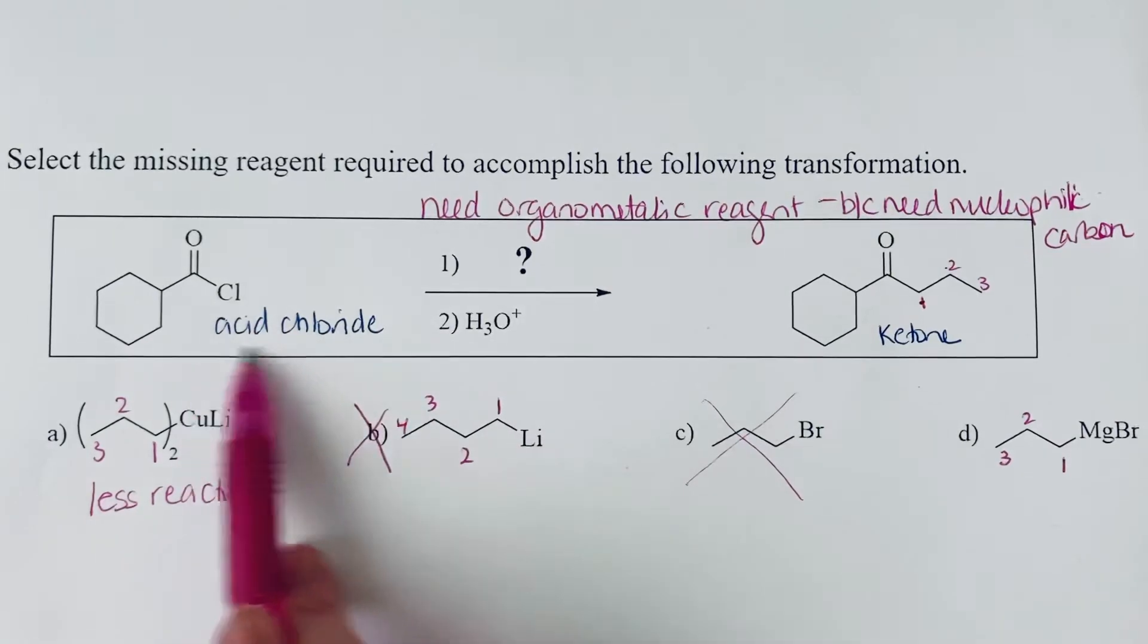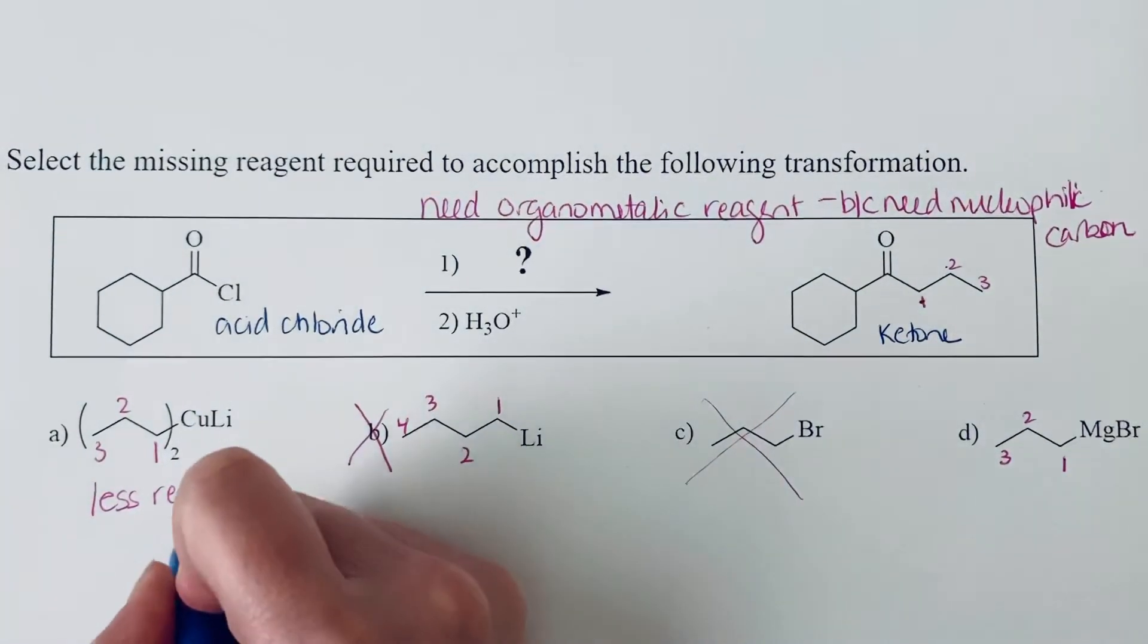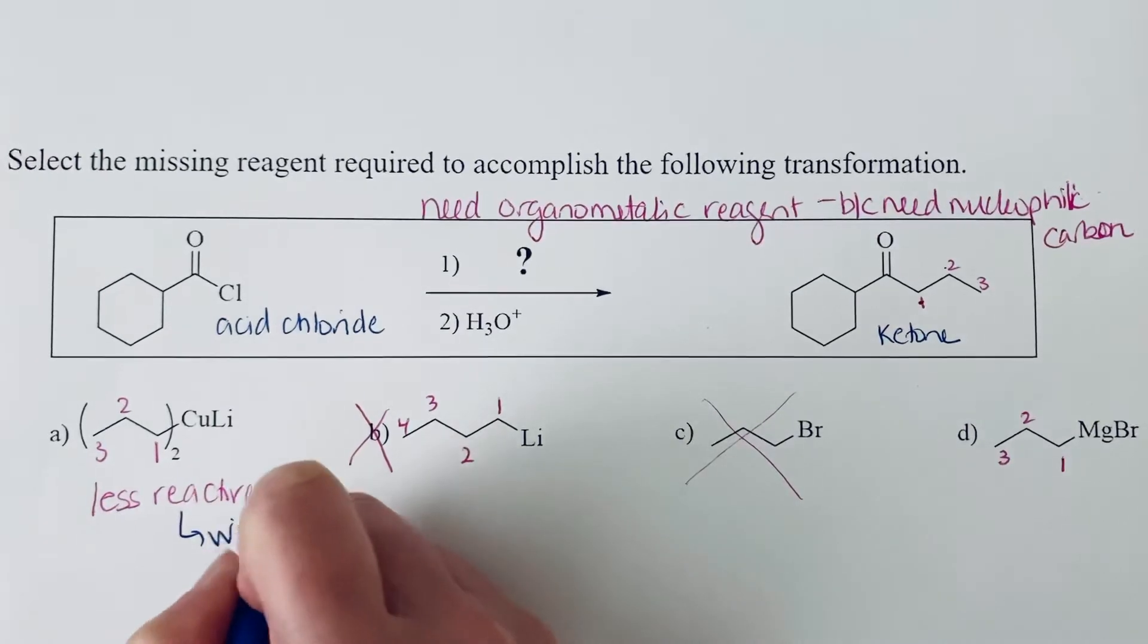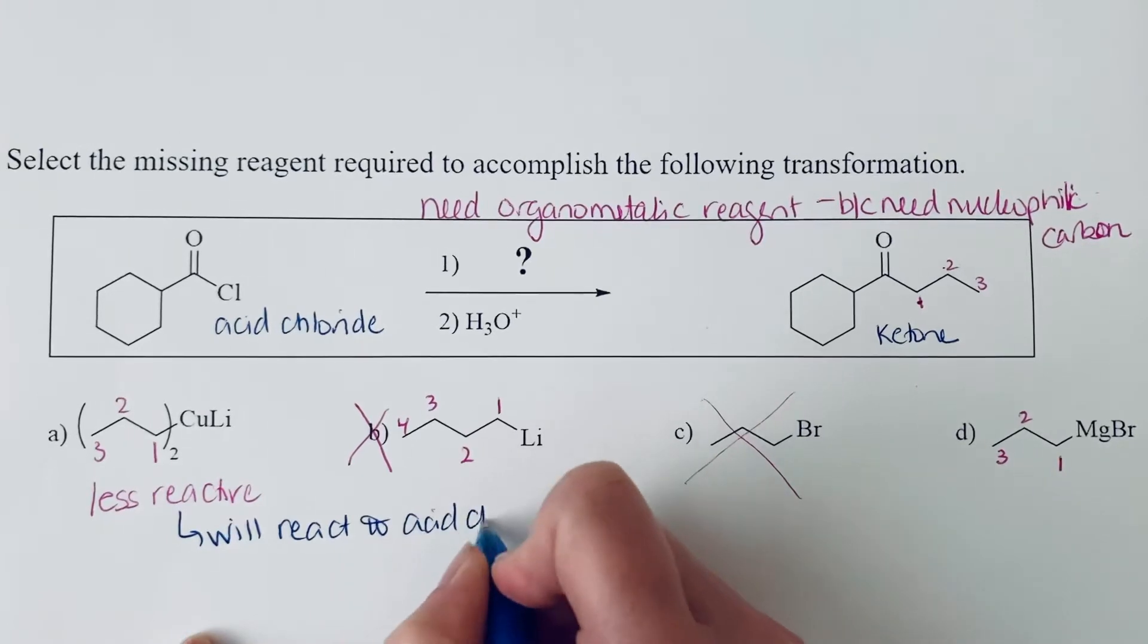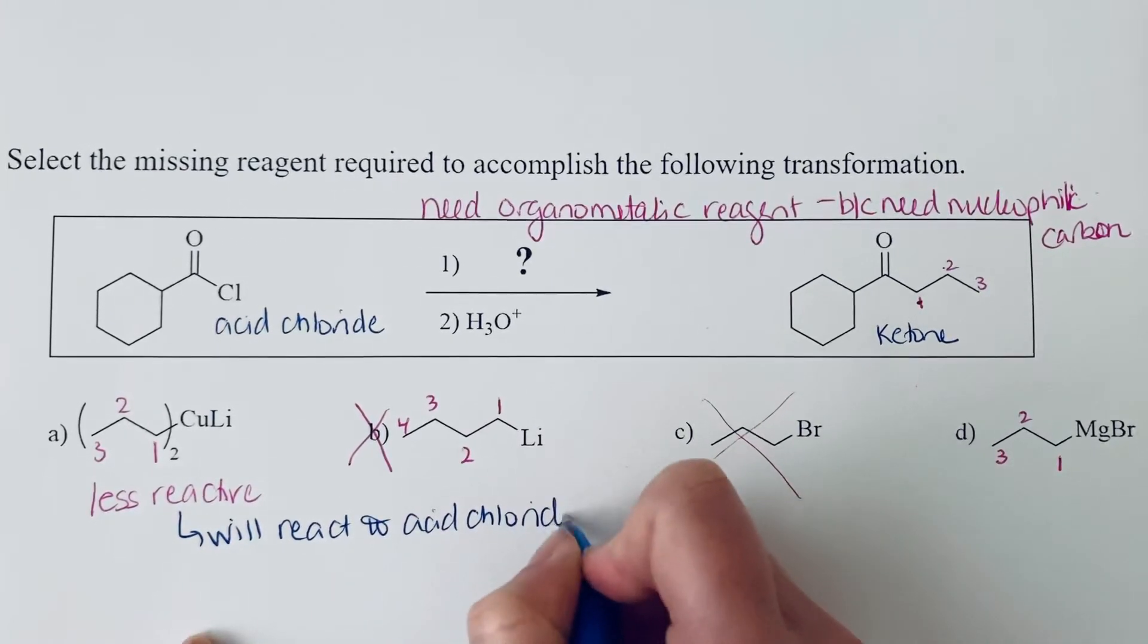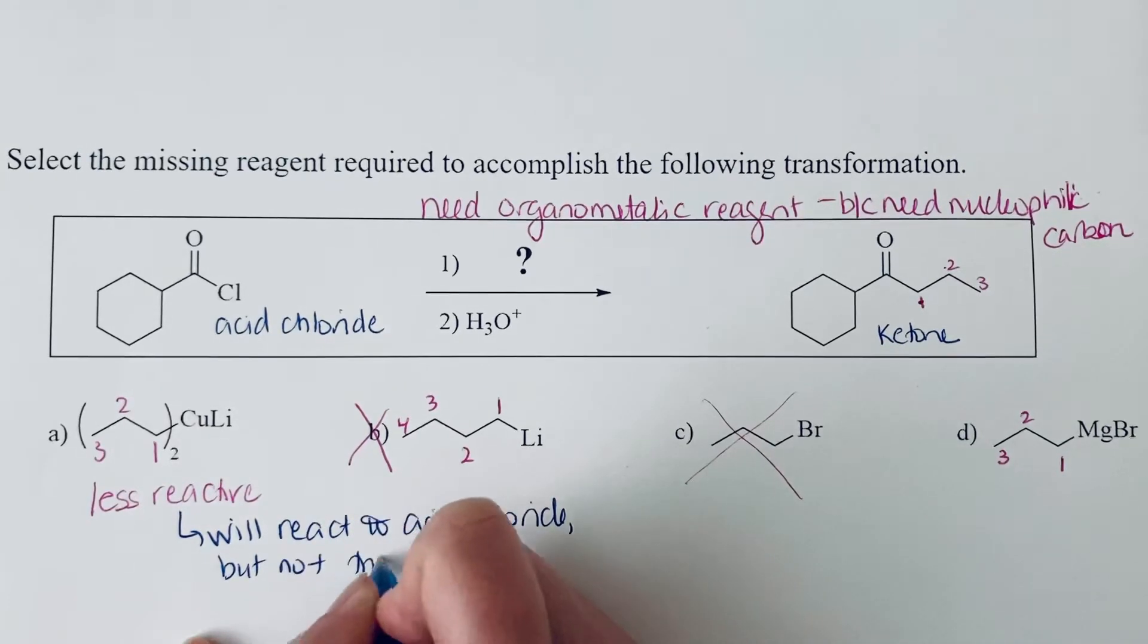And so that's going to be key because this will allow it to react with the more reactive acid chloride, but it will not react with the ketone. So this will react with the acid chloride, but not the ketone, right?